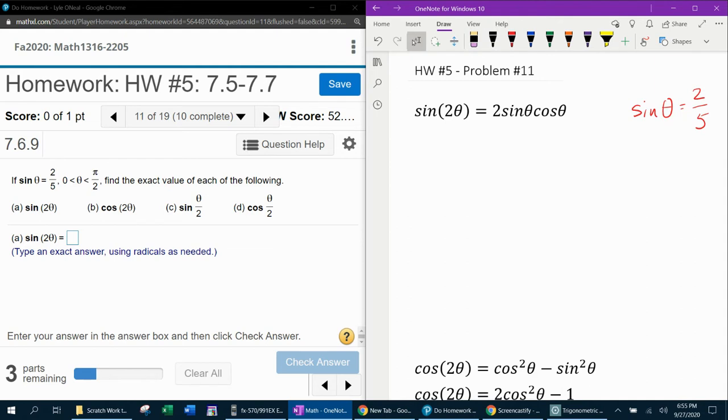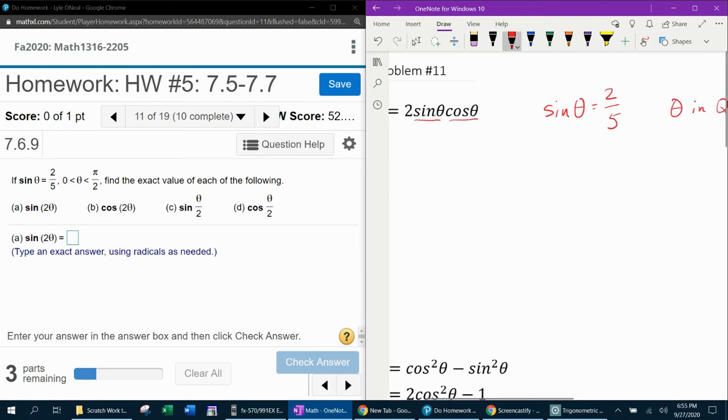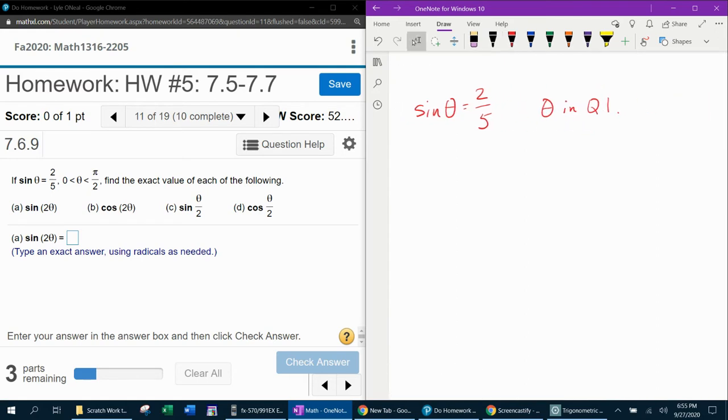I've got the formula for sine of 2 theta right here, and sine of 2 theta is 2 sine theta cosine theta. I've got sine theta. What I need is cosine theta. So, here's how we're going to get that. Recall that sine is y over r. So, in this case, I know what y is, and I know what r is. And then I can find x by using Pythagorean theorem.